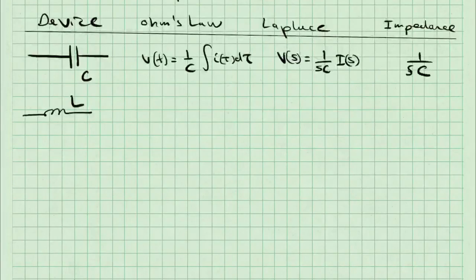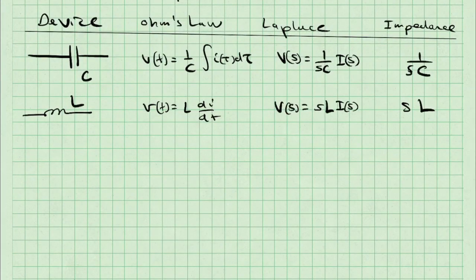For an inductor L, V of T is L di dt. With zero initial conditions in the Laplace domain, V of S is SL I, which gives me an impedance of SL.